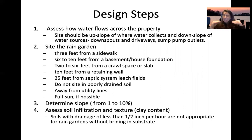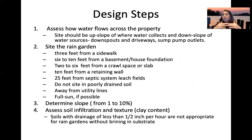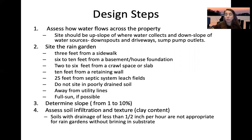Assess soil infiltration and texture. Clay content acts like a liner and prevents infiltration. Soils with drainage of less than one-half inch per hour are not appropriate for rain gardens without bringing in other substrate to allow infiltration to occur.